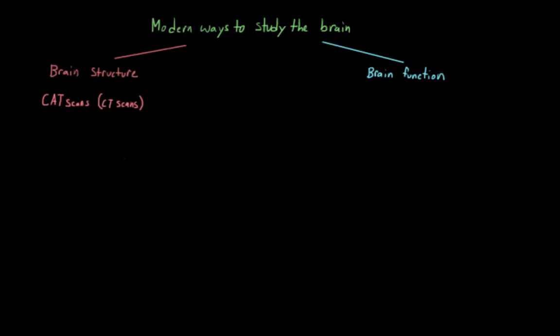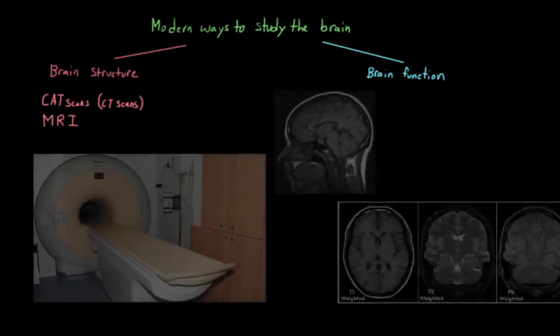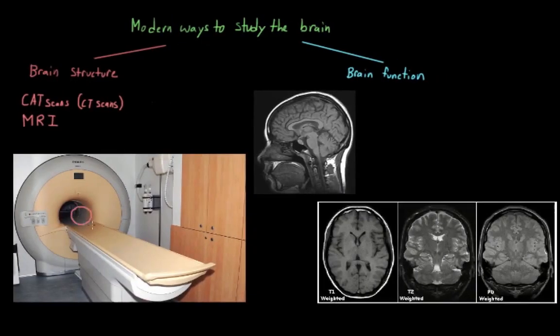Another way that we can look inside of the skull to look at brain structures is with magnetic resonance imaging, or MRI. Instead of using x-rays like a CAT scan, this method uses radio waves. A person's head is placed within a machine, and they're exposed to a strong magnetic field. This magnetic field causes the atoms in the brain to line up, to align in a certain direction.